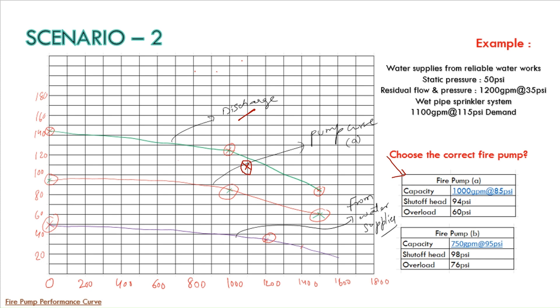and you can similarly verify whether this fire pump can be used or not in our case. So option B you can do and take it as a case study and let me know whether this 750 GPM at 95 PSI pumps can also be used based on our required system demand. I hope you understand the video.